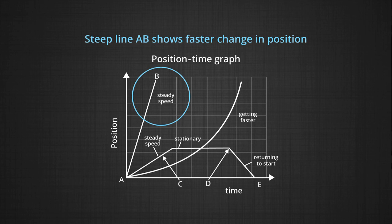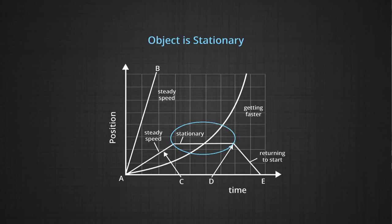To understand this further, let us see what it means when the position time graph is parallel to the x-axis or time axis. The stationary segment shows that the position has not changed during that duration. Since the location is unchanged as time passes, the object must be stationary or at rest.